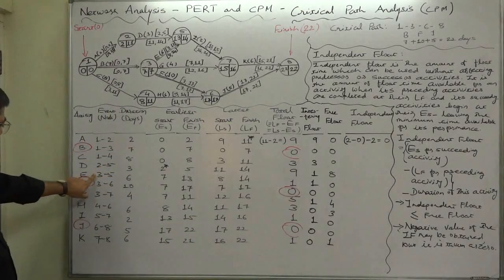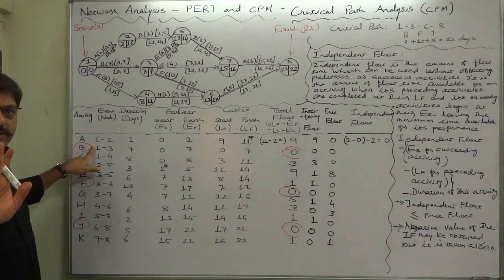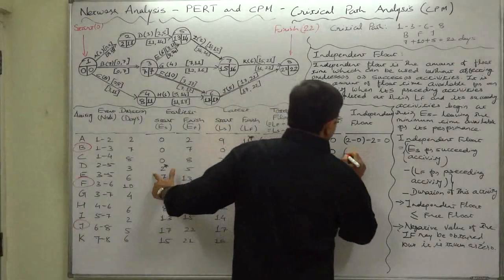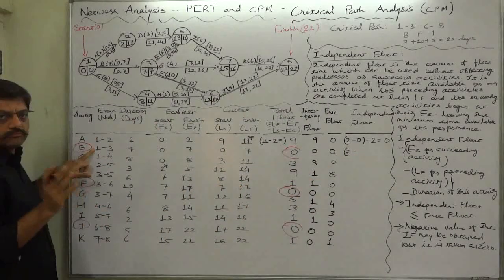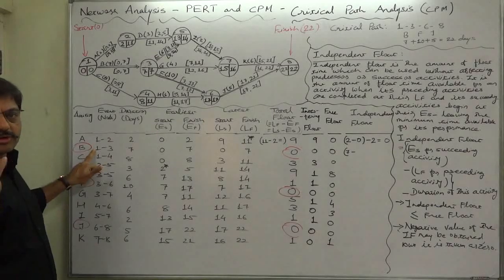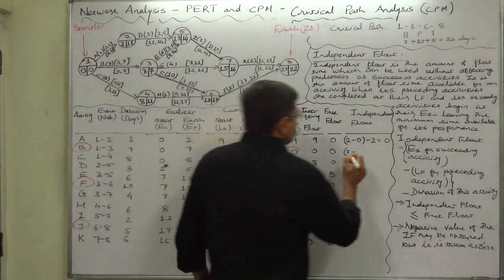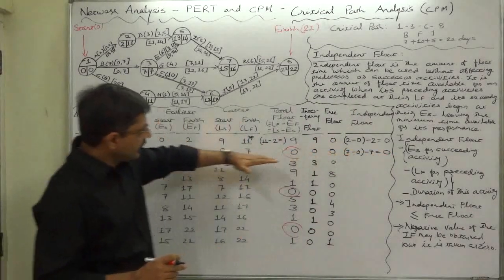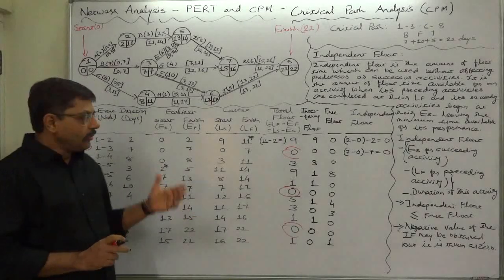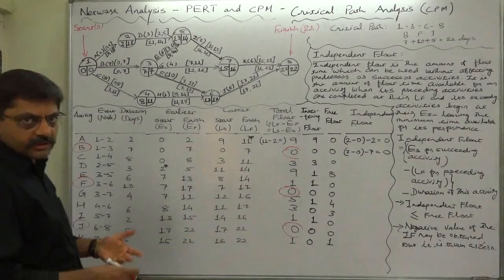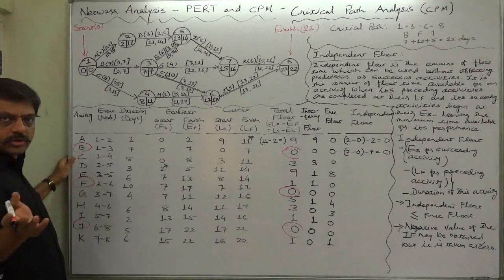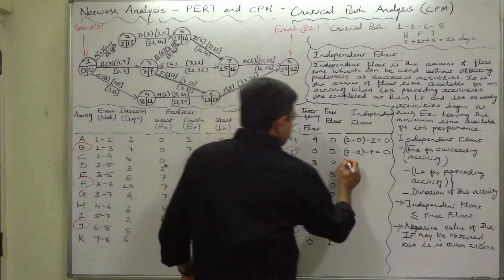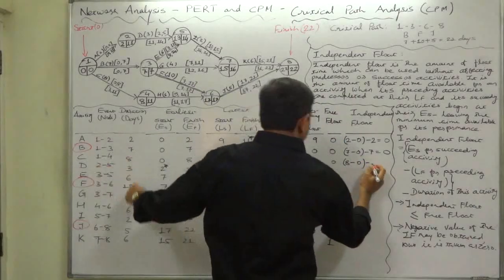Activity B (1,3): it is a critical activity so its float is always 0. Earliest start time of succeeding activity is 7, minus latest finish time of predecessor — B has no predecessor so it is 0 — gives 7 minus 0 minus duration of B (7) equals 0. All floats of critical activities are always 0. Activity C is also a start activity; its successor is H. Earliest start time of H is 8: 8 minus 0 minus duration of C (8) equals 0.